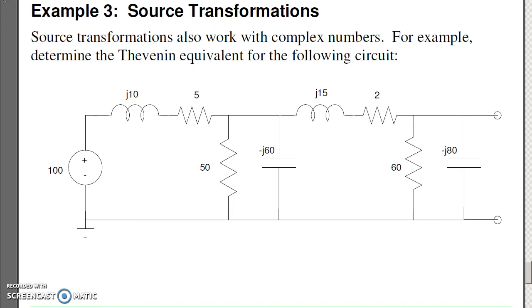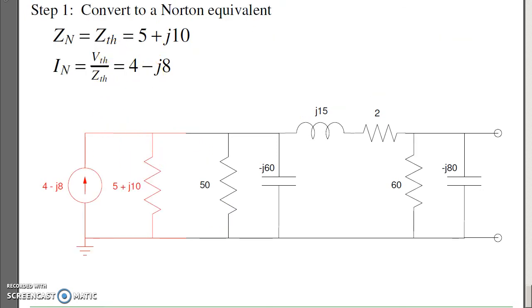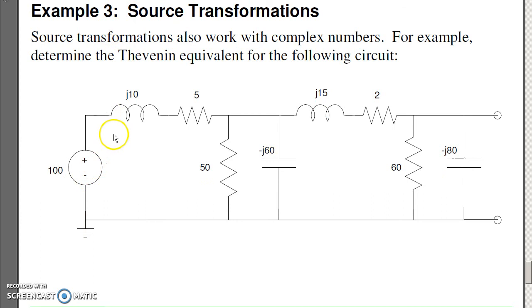You can also use source transformations with complex numbers. Here the trick would be convert from Thevenin to Norton, back to Thevenin, back to Norton, and vice versa. Except now I'm going to be using complex numbers. To illustrate, I'll take the voltage source, 100 volts, and 5 plus j 10 ohms, convert to Norton.